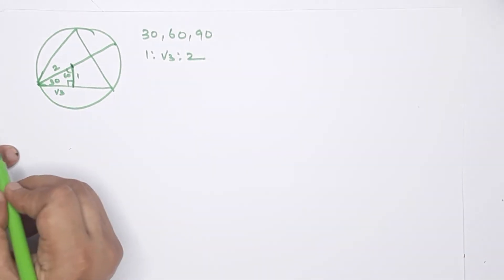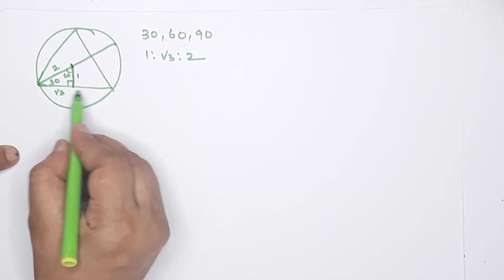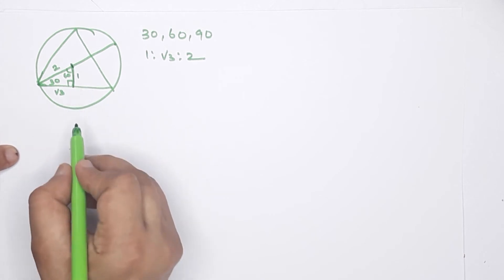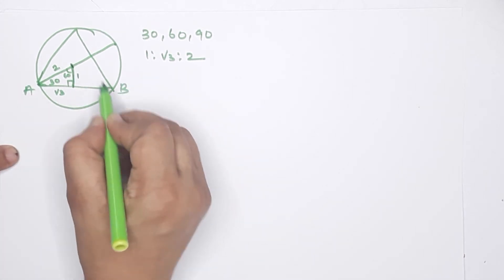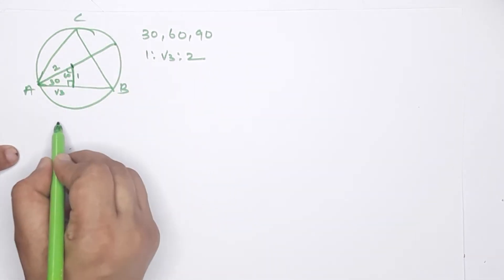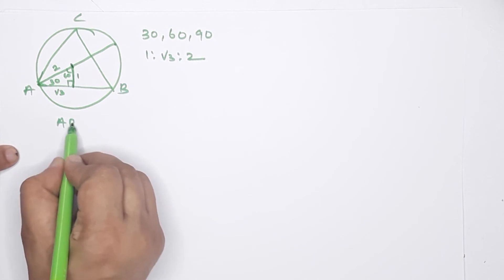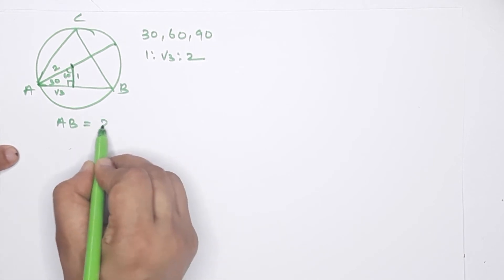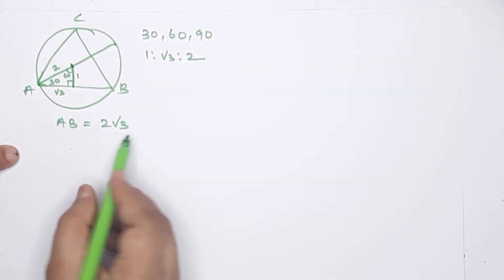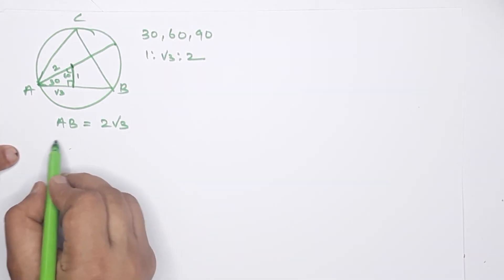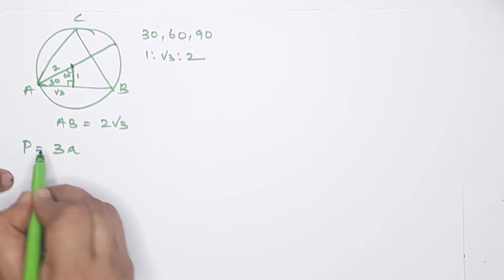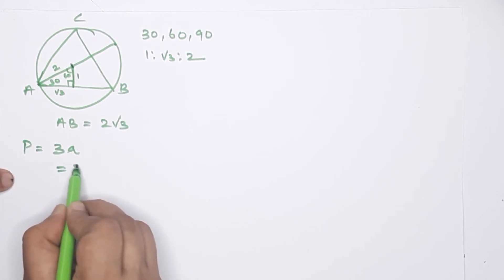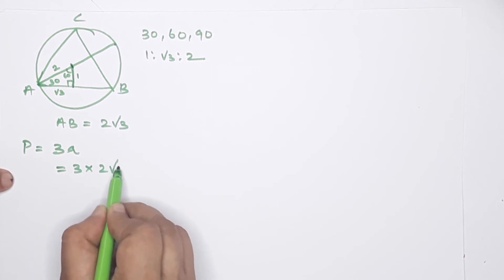This length is 2, so the side AB of the triangle equals 2√3. The side of the equilateral triangle is 2√3. Therefore, the perimeter P equals 3 times 2√3, which equals 6√3.